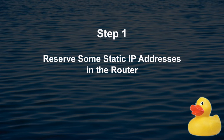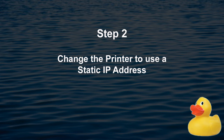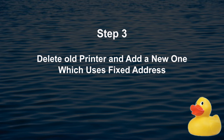There are three stages we need to carry out. First, we need to reserve some static IP addresses in the router so that it's not allocating an address to the printer each time it turns on. Second, change the printer itself so that it doesn't ask for an IP address anymore but just uses a static one we've given it. Third — and most straightforward — remove the old printer driver from the PC and add a new printer using that fixed address. Once done, we won't have any more problems with offline printers.